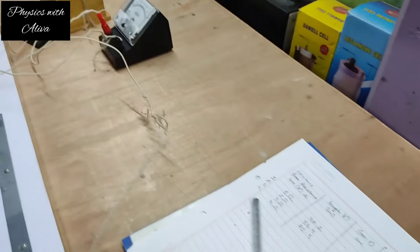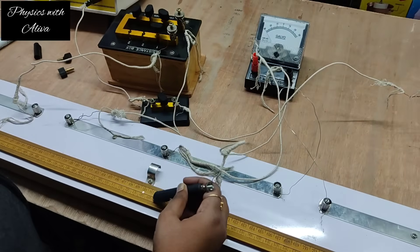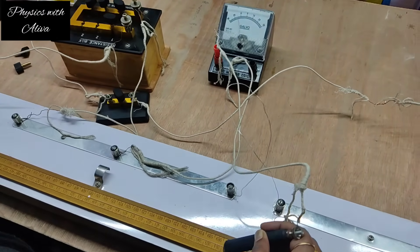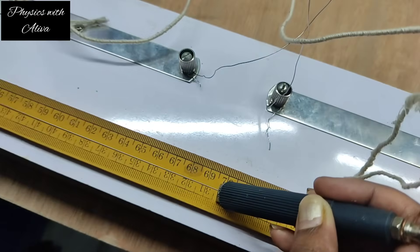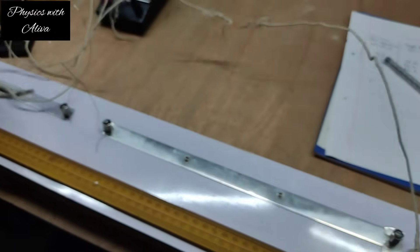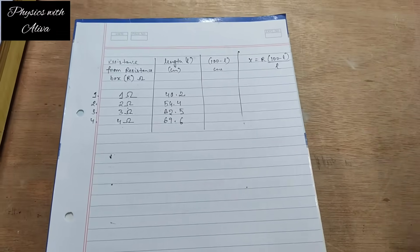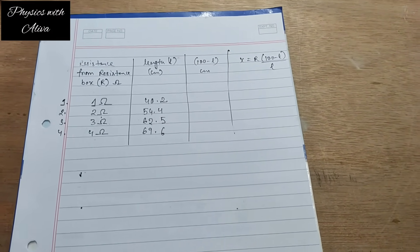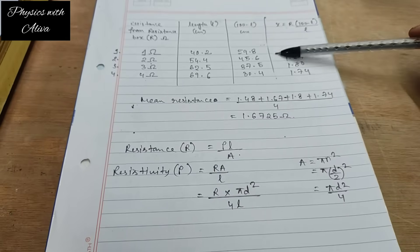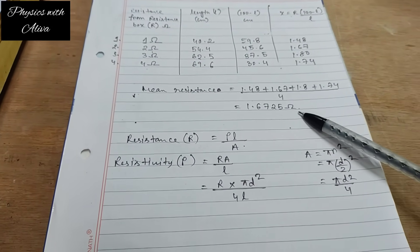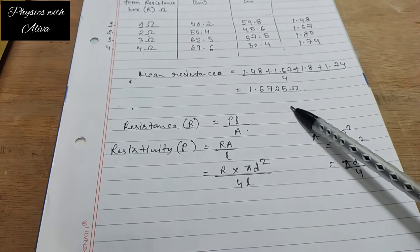For the third reading we take 3 ohm resistance from the resistance box and try to get the null point. We get zero deflection at L = 62.5 cm. Then we take 4 ohm resistance from the resistance box. We find zero deflection and the length is 69.6 cm. So for 4 ohm resistance, L is 69.6 cm.